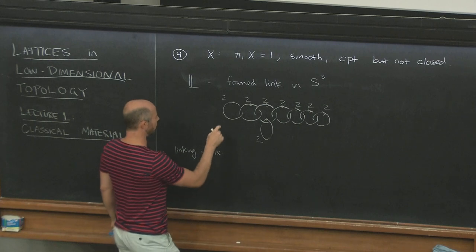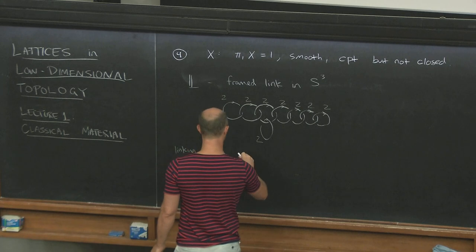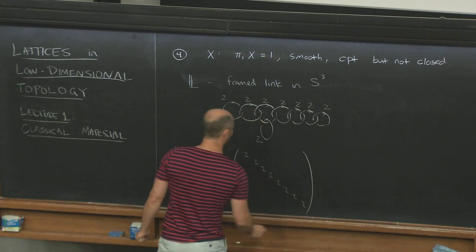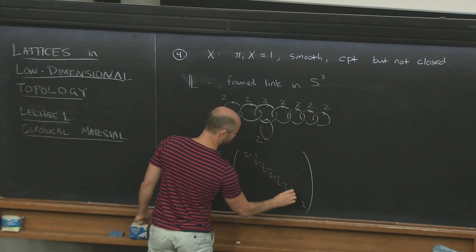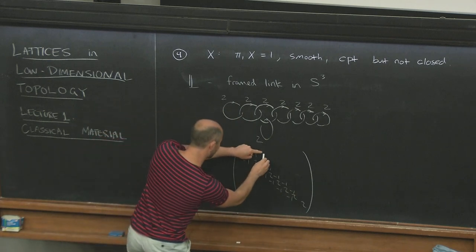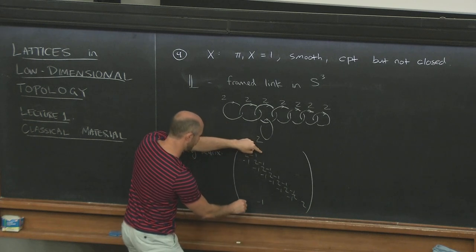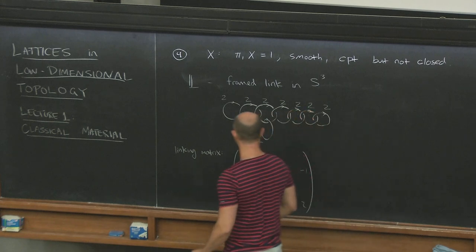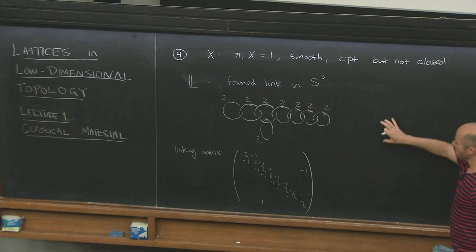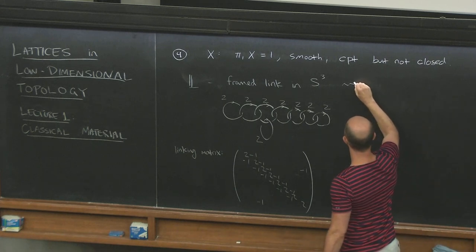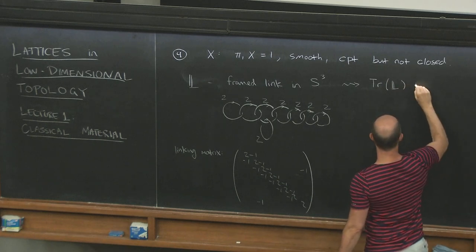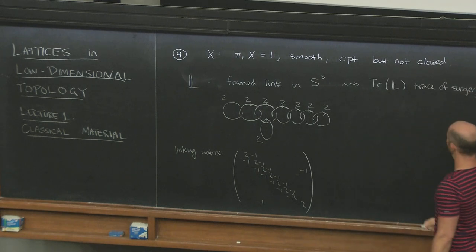Numbering the components one through eight, I get an eight by eight linking matrix. It has twos down the diagonal, minus ones on the super- and sub-diagonals down to the ultimate entry, and then a minus one in the (8,3) and (3,8) positions. That's the linking matrix of this link — a particular example I want to work with.